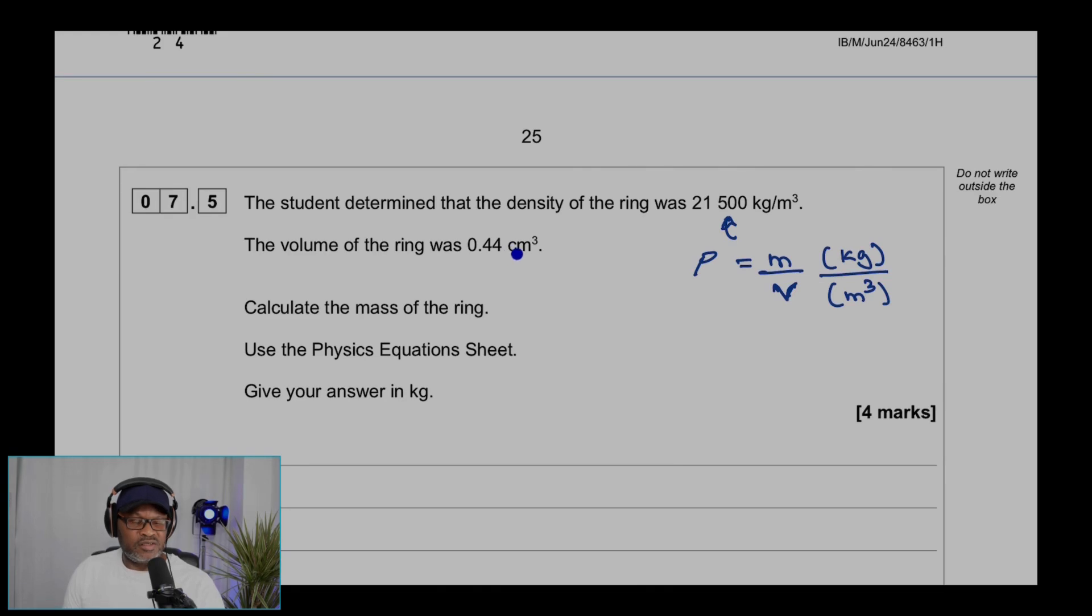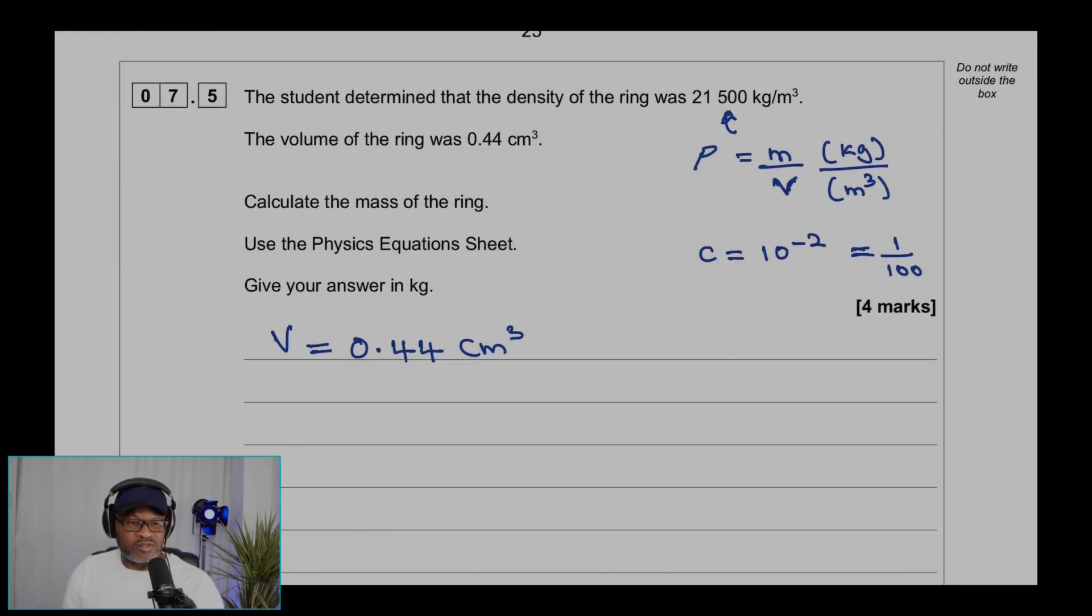So we need to convert centimeter cube into meter cube. 'Cent' means 1 over 100, or 10 to the power minus 2. For us to convert the volume which is 0.44 centimeter cube, the cube is applying to both cent and meter. So we need to write 0.44 times (10 to the power minus 2) cubed. We're replacing the C with 10 to the power minus 2 and put as a cube, and we get meter cube.